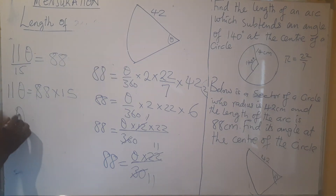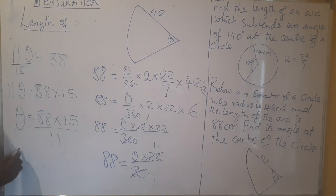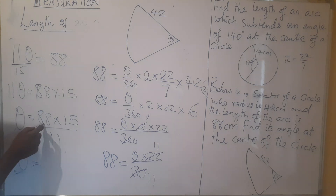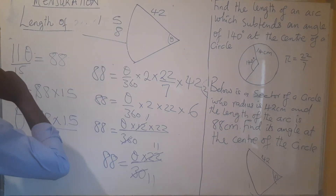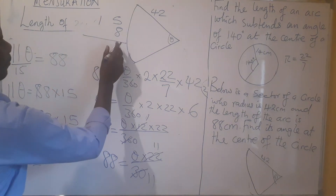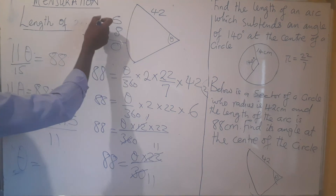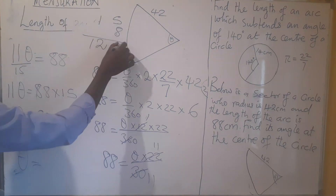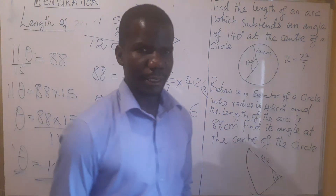At this point, 11θ equals 88 multiplied by 15. Then θ equals (88 × 15) / 11. Since 11 into 88 is 8, we get 8 multiplied by 15 equals 120. So our theta is 120 degrees. Just as I mentioned, these are questions that we really don't need a lot of effort to work out.